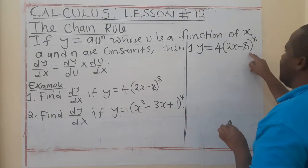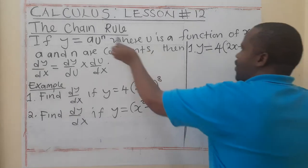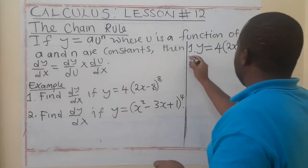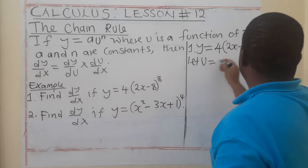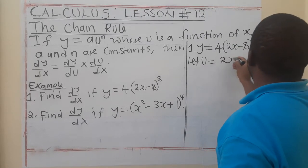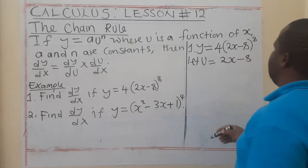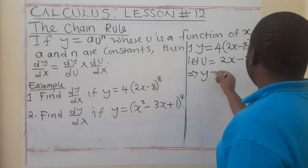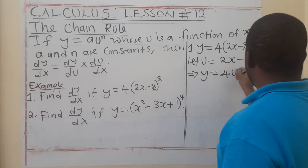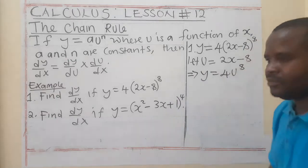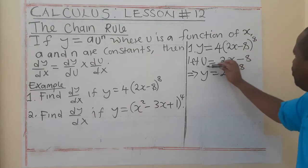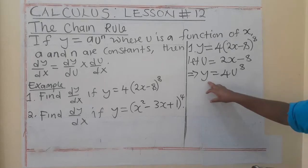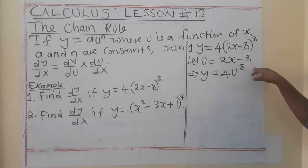And what is our n? Our n is 8 here. So, what we are saying is that, you say, let u be equal to 2x minus 8. This implies that the function now is y is equal to 4u to the power 8, because we are saying this one is u. So, now, we have y is equal to 4u to the power 8.